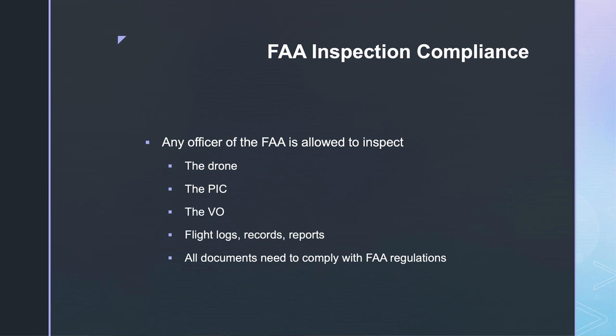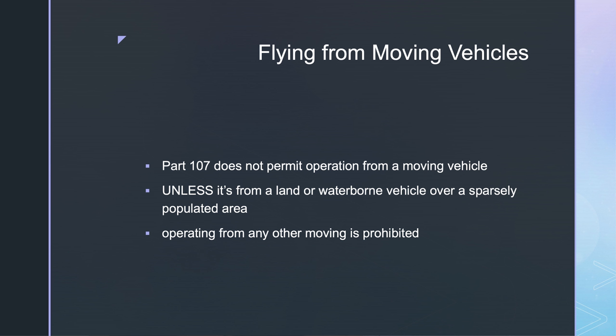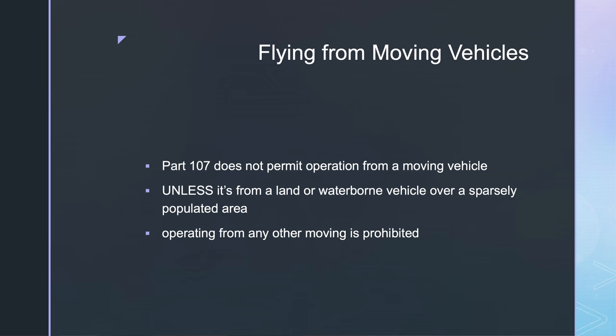The FAA inspection compliance. Any officer of the FAA is allowed to inspect your drone, pilot in command, the visual observer. They may require to look at your flight logs, records, reports. All documents need to comply with the FAA regulations. Flying from moving vehicles. The Part 107 does not permit operation from a moving vehicle unless it's from a land or waterborne vehicle and it is over a sparsely populated area. This is the keyword. Sparsely populated area. And operating from any other moving vehicle is prohibited. If you are in a moving helicopter, boat, you are not at all authorized to fly your drone.